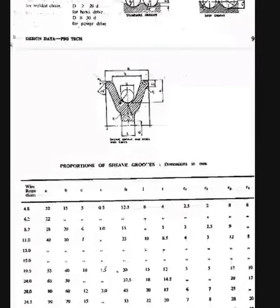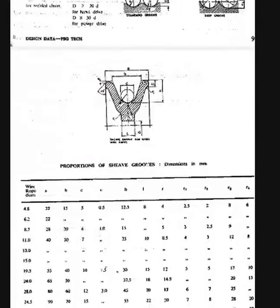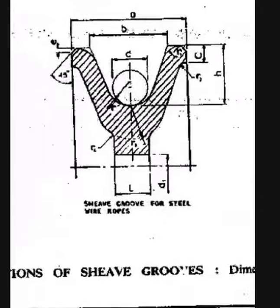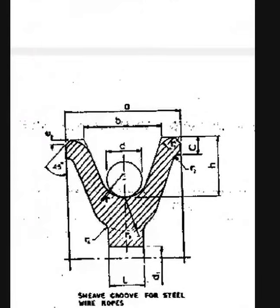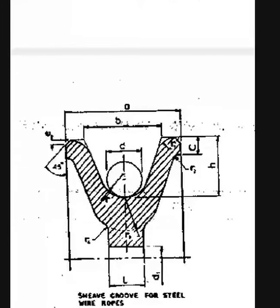The proportions of sheave groups are given in mm. Based on the wire rope diameter you have to select the sheave. Various dimensions are given: a, b, c, capital C, h, r1, r2, r3, r4, d1, l, and small e. Based on the diameter of the rope selected in Step 1, you select all proportions for the sheave and pulley.